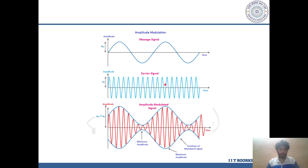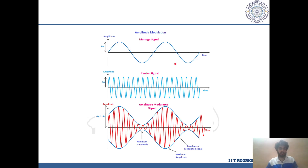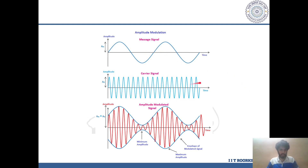This figure represents a typical low frequency message signal, which could be the signal representing human speech, where we often make the assumption that it resembles a sinusoid. This represents a high frequency carrier signal, and these two, when combined together, produce an amplitude modulated signal. In this case, the amplitude of the initial message signal is varied according to the amplitude of the carrier signal.